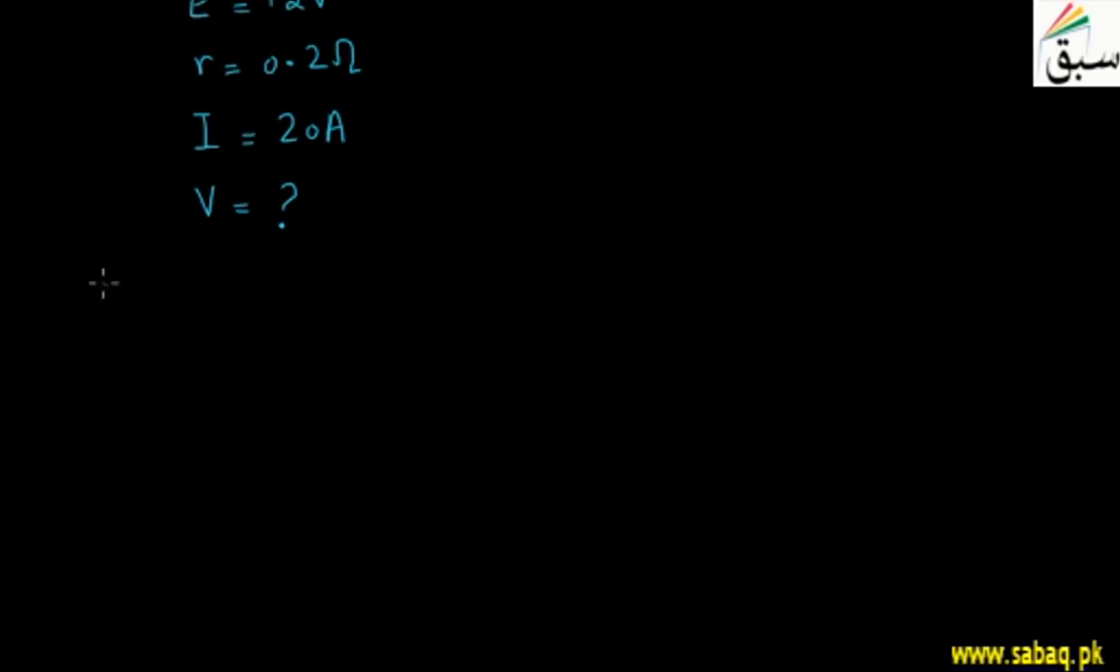We know that we have an equation that V equals E plus I·R, where V shows the voltage, E is EMF, I is current, and R is internal resistance.